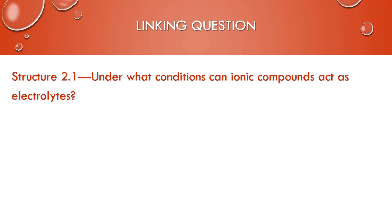Now, when we're talking about electrolysis of molten salts, this links back to structure 2.1, under what conditions can ionic compounds act as electrolytes? And there's two scenarios. One is molten, so hot enough that it is melted, it's liquid, the ions are free to move. Or when they're dissolved in water, when they are dissociating in water, then they are producing those ions and that can conduct electricity as well.